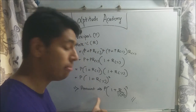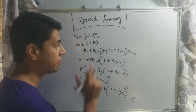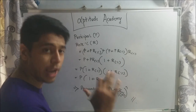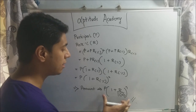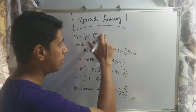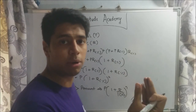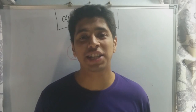Everyone calls this the formula for compound interest, but that's wrong. This is the formula for the amount you get when the bank operates on compound interest. To get the actual compound interest, you subtract the principal from this amount — that gives you the additional amount, which is your compound interest.